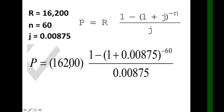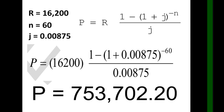So what is now the present value of the car? It's 753,702.20. Round off your answer to the nearest hundreds. This is the principal of the car for 5 years if you pay 16,200.